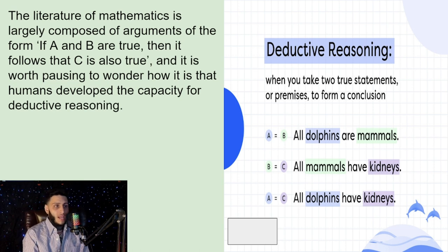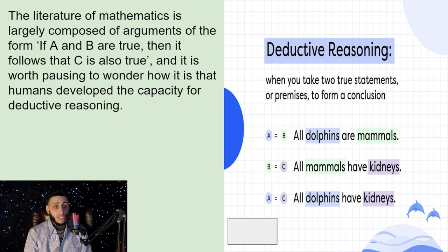The literature of mathematics is largely composed of arguments of the form if A and B are true, then it follows that C is also true. We can also think of Pythagorean theorem when we think of this, the same model that Pythagoras created for the triangles. And it is worth pausing to wonder how it is that humans developed the capacity for deductive reasoning.